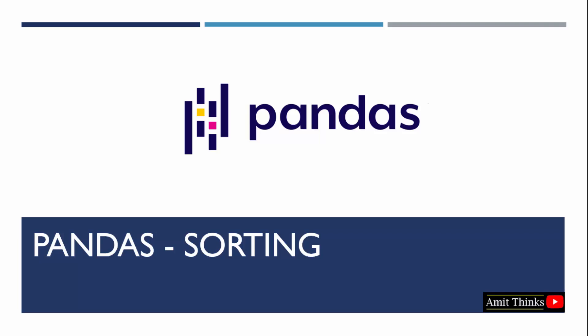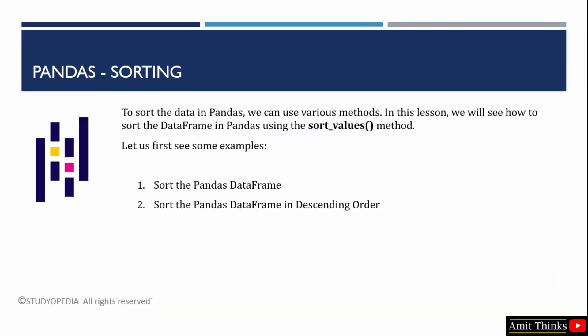In this lesson we will learn how to sort data in pandas. We have various methods available. We will use the sort_values method, and two examples will be considered: first we will sort the pandas DataFrame in ascending order, then we will achieve the same in descending order. Let's begin.